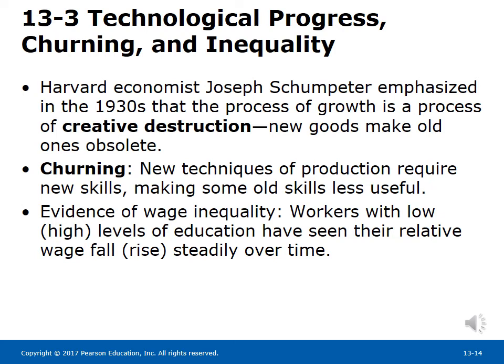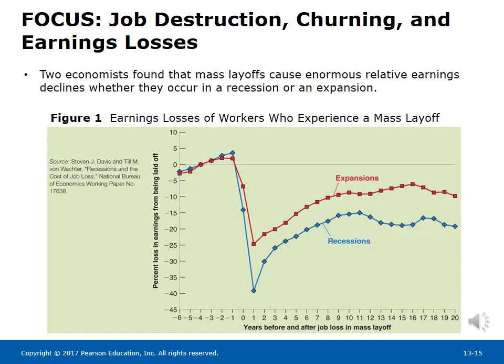13-3 Technological Progress, Churning, and Inequality. Harvard economist Joseph Schumpeter emphasized in the 1930s that the process of growth is a process of creative destruction. New goods make old ones obsolete. New techniques of production require new skills, making some old skills less useful. Evidence of wage inequality shows workers with low levels of education have seen their relative wages fall, while those with high levels have seen them rise steadily over time. Two economists found that mass layoffs cause enormous relative earnings declines, whether they occur in a recession or an expansion.